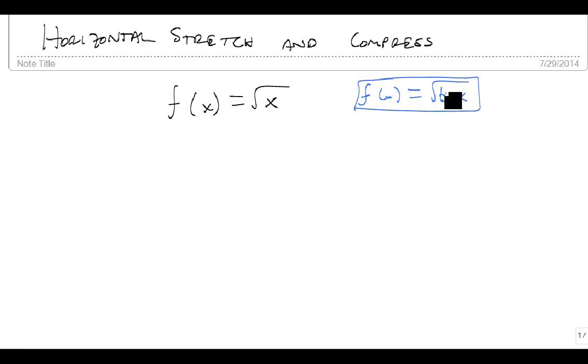So notice the way this is set up, the b is on the inside, and that's how we know it's horizontal. Anything inside of the base operator that we're using is horizontal. Anything outside is vertical. That was true for our shifting, it's also true for our stretching and compressing.